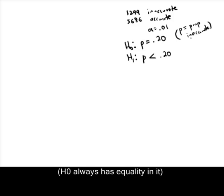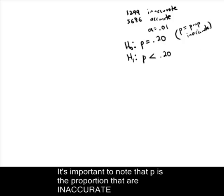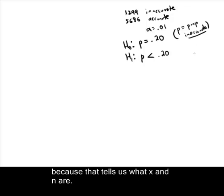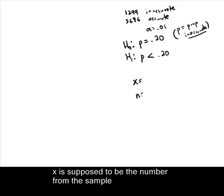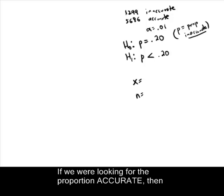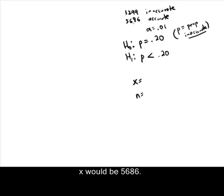Now, it's important in this case to note that P is the proportion that are inaccurate, because that's going to tell us what our X and our N are, because X is supposed to be the number from the sample of what we're looking for. And if we were looking for the proportion that are accurate, X would be 5686. But we're looking for inaccurate, so X is going to be 1299.